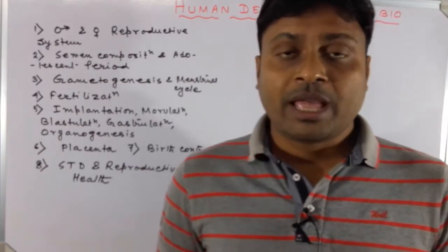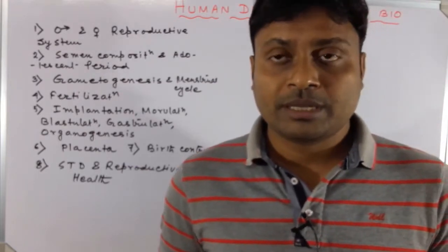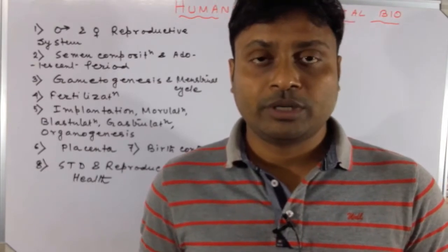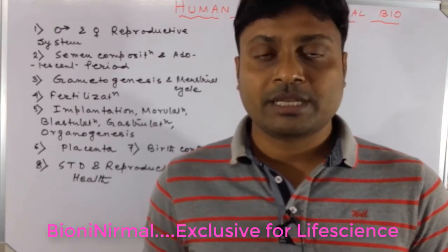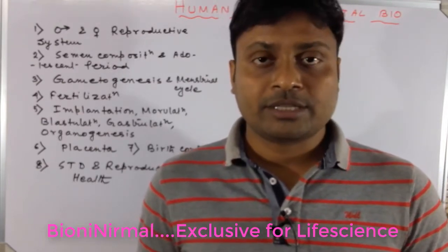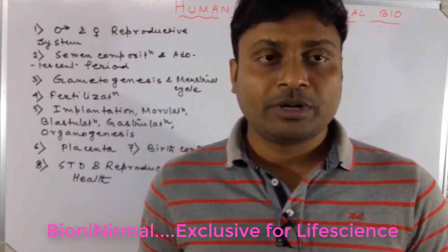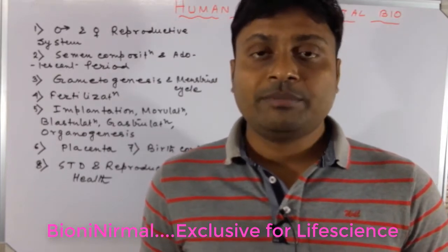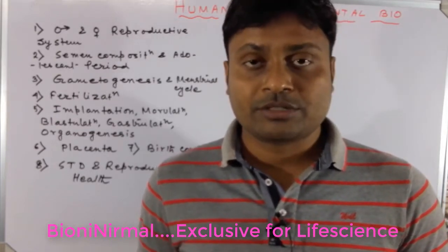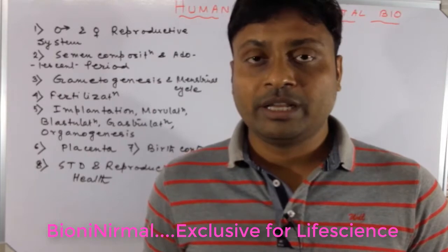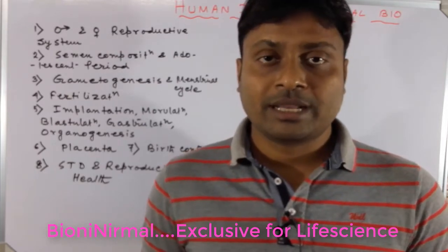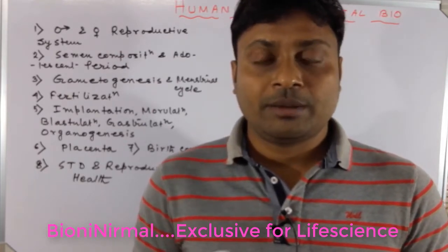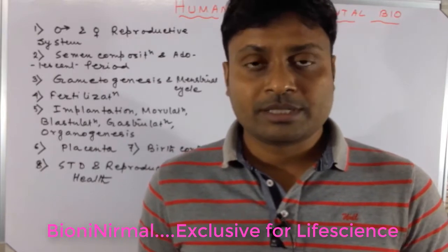In the male reproductive system there are two kinds of reproductive organs: one is the primary sex organ and another is the secondary sex organ. In the male reproductive system the primary sex organ is the testis, and in the female reproductive system the primary sex organ is the ovary. Secondary sex organs are also present in both male and female reproductive systems.